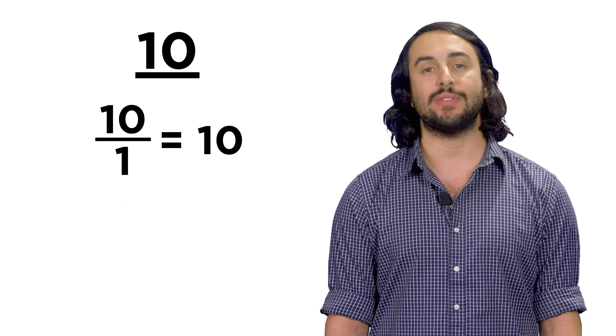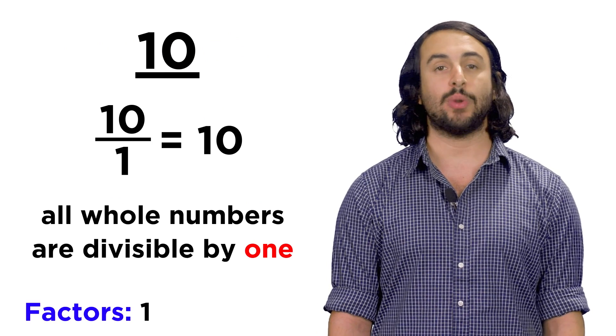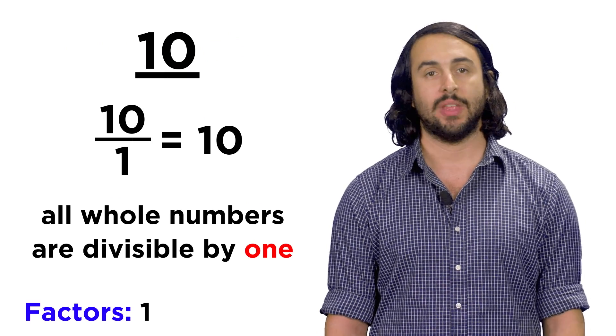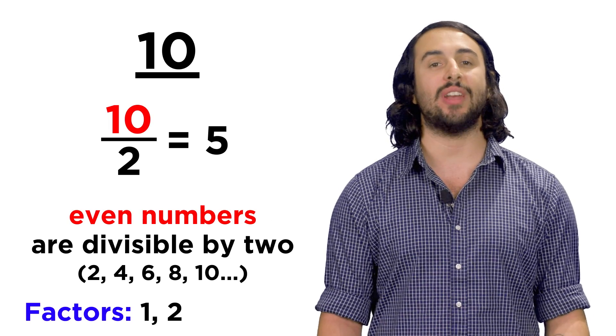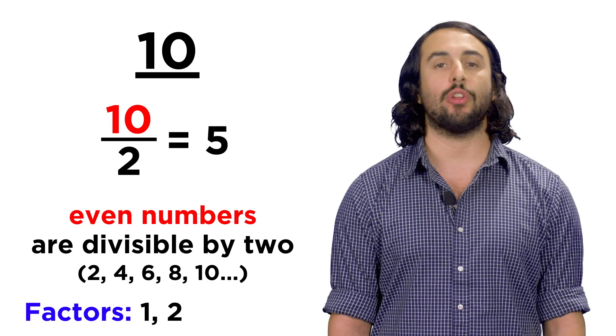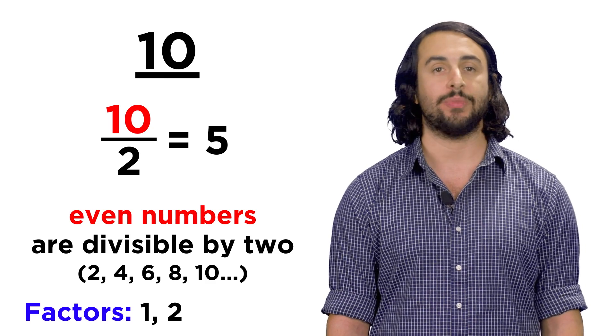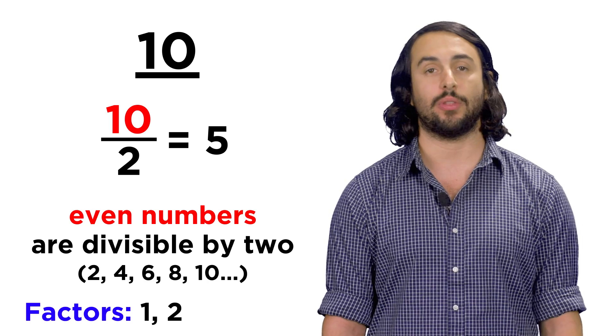Take the number ten. Ten can be divided by one, which just gives ten. In this way, every number is divisible by one. Ten is also divisible by two, because it is an even number. Even numbers are the ones that are divisible by two, like two, four, six, eight, and so forth.